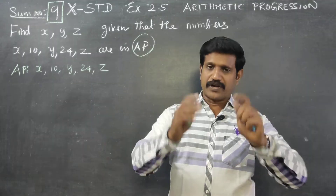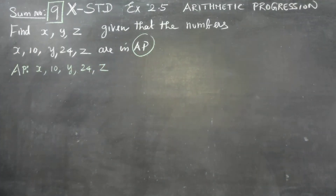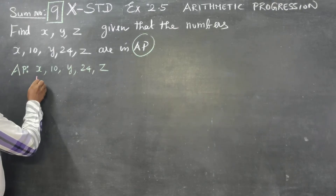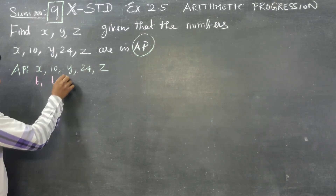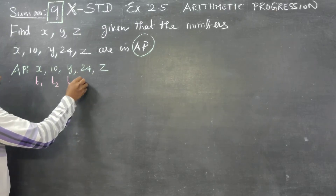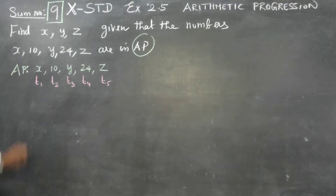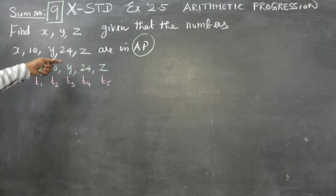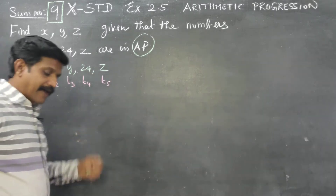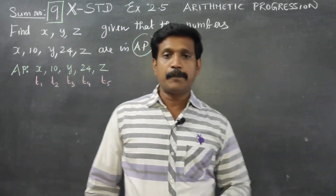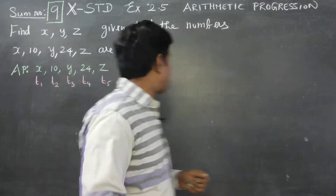In arithmetic progression, the terms are called t1, t2, t3, t4, and t5 — that is the 1st, 2nd, 3rd, 4th, and 5th terms. Here t1=x, t2=10, t3=y, t4=24, t5=z.